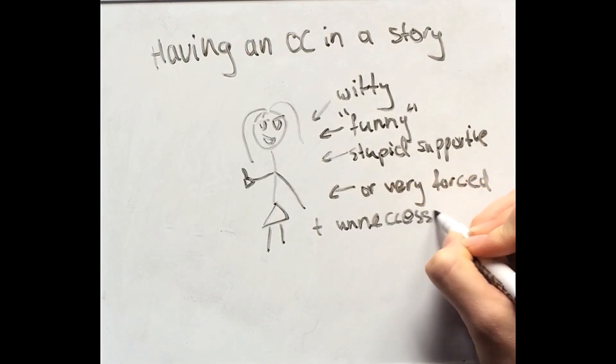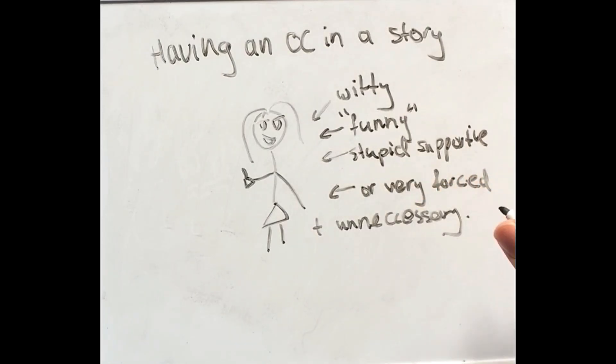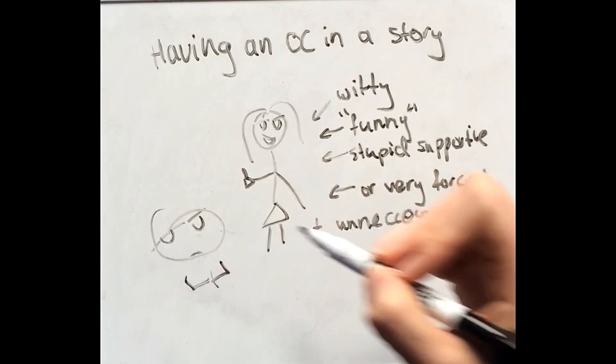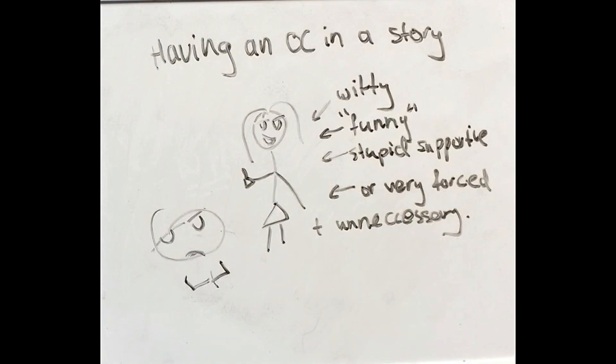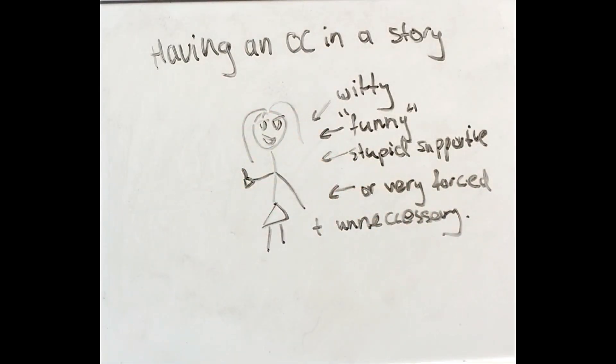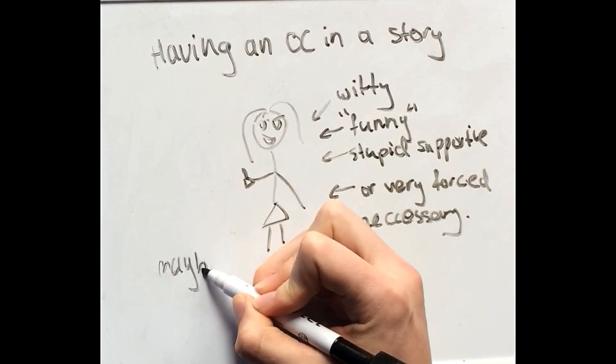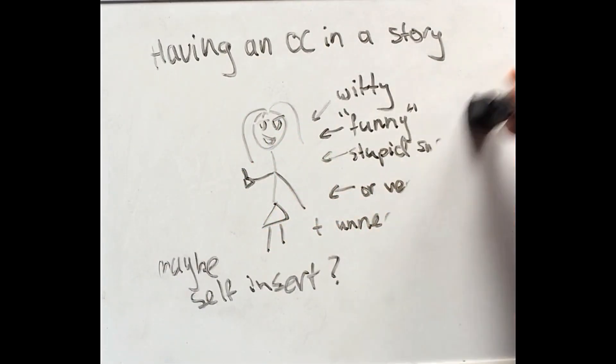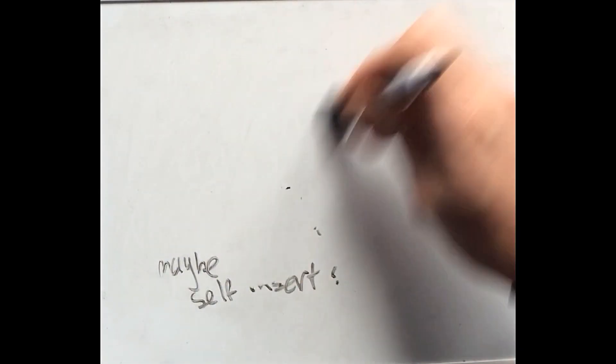And a lot of the time they're not even necessary to a story. If you took that OC out of there, you could easily insert a character that already exists within that fandom or that universe, whatever it is you're writing in. So I just find the whole thing with an OC to be pointless. It's almost like a self-insert or a friend insert I have no idea. But for the most part I think it takes quite a bit of talent to write an OC well that actually works within a story.